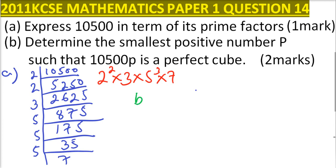From there, we go to Part B of the question. We are asked to determine the smallest positive number such that 10,500 times P is a perfect cube. So we already have our factors here. We have 2 squared multiplied by 3 multiplied by 5 cubed multiplied by 7.